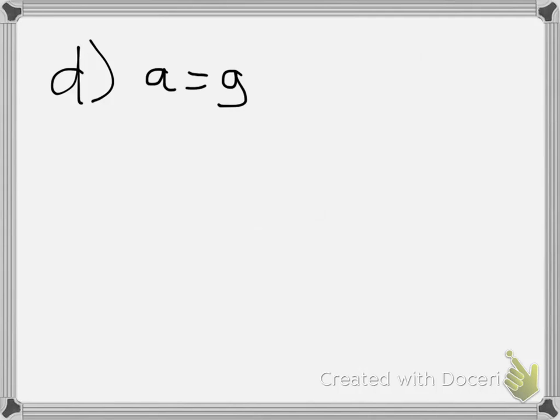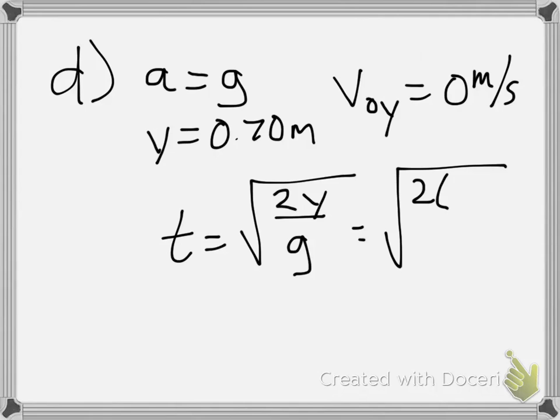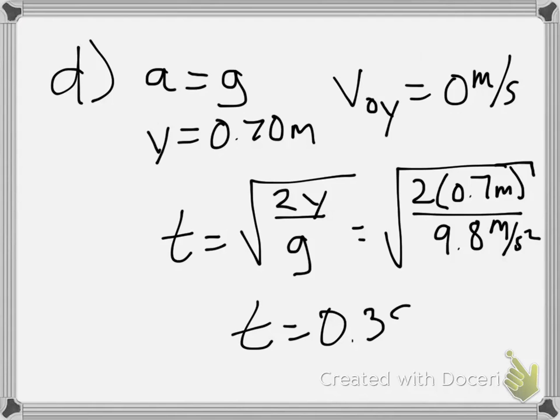We know it's in free fall now because it's no longer held up by the tension. So the only thing that we have is the acceleration is g, or negative 9.8. We know it falls a distance, in this case y, of 0.70 meters. So we can use our equation that we've used in the past to simplify this, that t is equal to the square root of 2y over g, because we know our initial velocity in the y direction is 0 meters per second. So if you do that, it would be square root of 2 times 0.7 meters over 9.8 meters per second squared, and you get a time of 0.38 seconds.